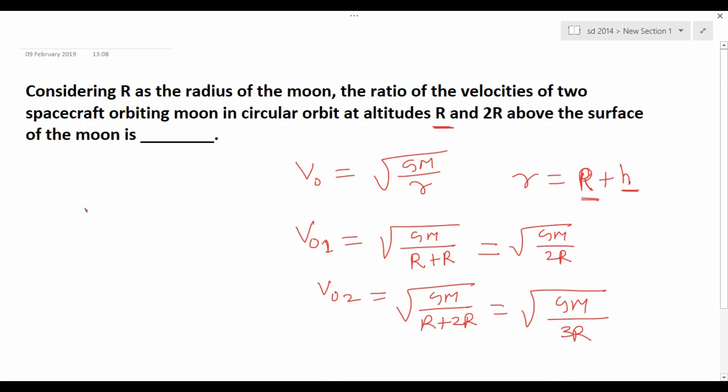Then what is the ratio? V_o1 by V_o2. If we divide these two, we will get...